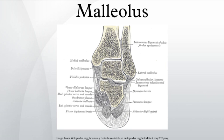Lateral malleolus: the lower extremity of the fibula, also called the distal extremity or external malleolus, is of a pyramidal form and somewhat flattened from side to side. It descends to a lower level than the medial malleolus. The medial surface presents in front a smooth triangular surface, convex from above downward, which articulates with a corresponding surface on the lateral side of the talus. Behind and beneath the articular surface is a rough depression, which gives attachment to the posterior talofibular ligament.